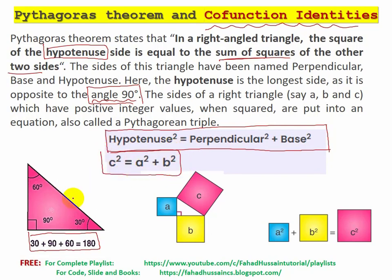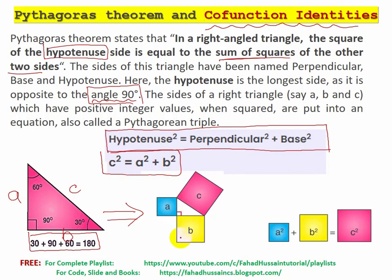If you look at the right-angled triangle, this side is A, this side is B, and this side is C. Looking at the right-angle triangle in Pythagorean form, if we look at side A it is the smallest. B is the second side, and C is equal to the square root of A squared plus B squared.